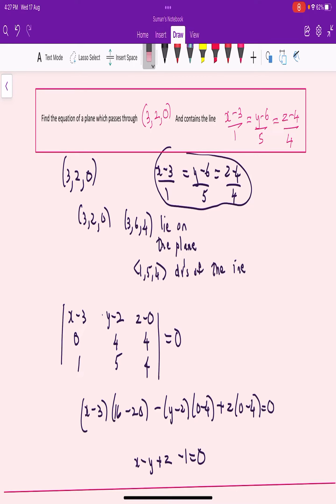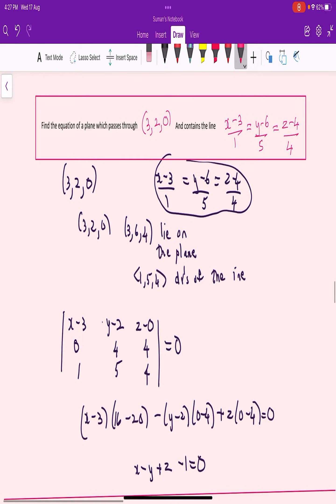So yet another problem in 3D geometry planes. Find the equation of a plane which passes through (3,2,0) and contains the line (x-3)/1 = (y-6)/5 = (z-4)/4.